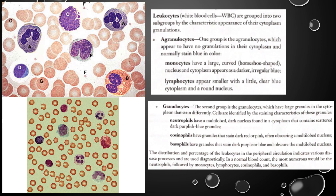Neutrophils increase during bacterial infections. They are also capable of phagocytosis — they go in and eat up bacteria in the area — and they release antimicrobial chemicals. Roughly 60 to 70 percent of the white blood cells in a blood sample are going to be neutrophils, fighting off bacteria all the time.